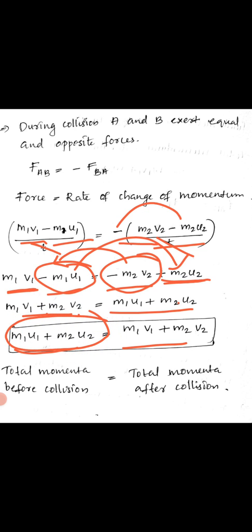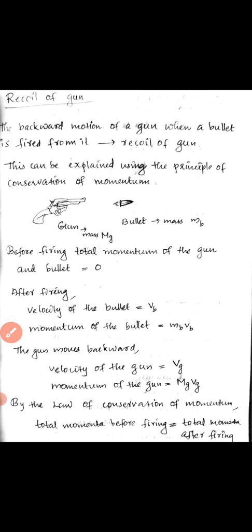Total momentum before collision — M1U1 plus M2U2 — is equal to total momentum after collision — M1V1 plus M2V2. This is the law of conservation of momentum. Now we look at the application: recoil of the gun. The backward motion of the gun when a bullet is fired from it is called recoil of the gun. We will explain this phenomenon using conservation of momentum.